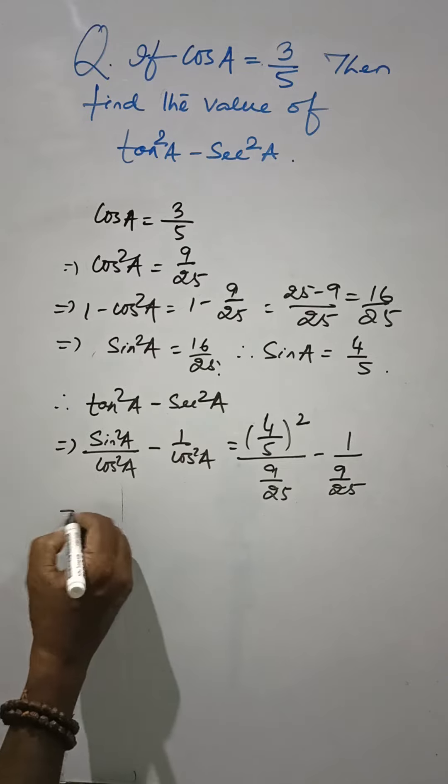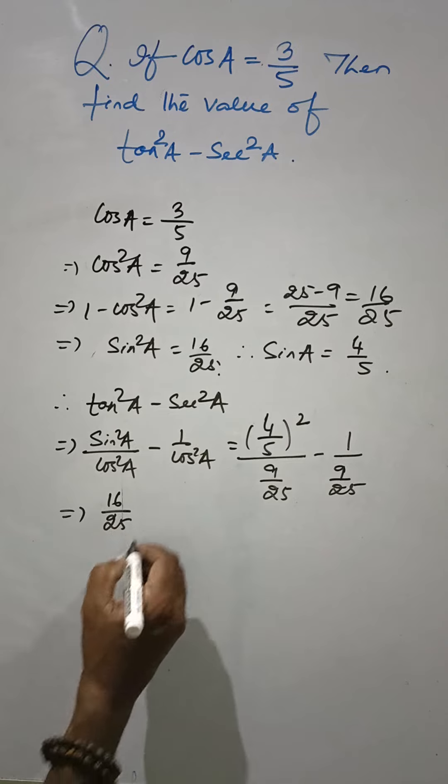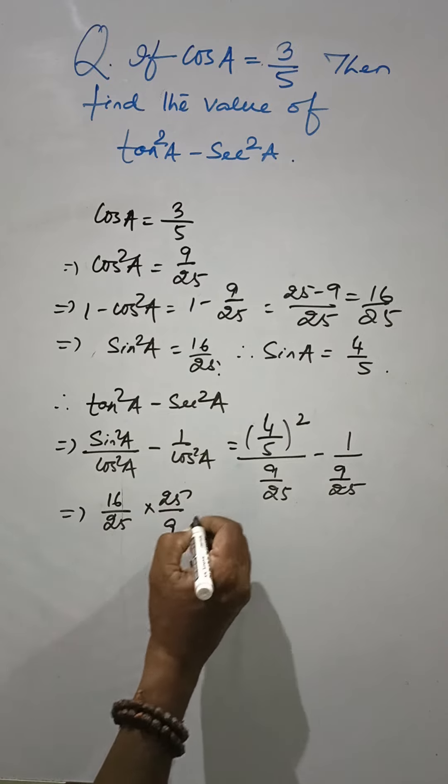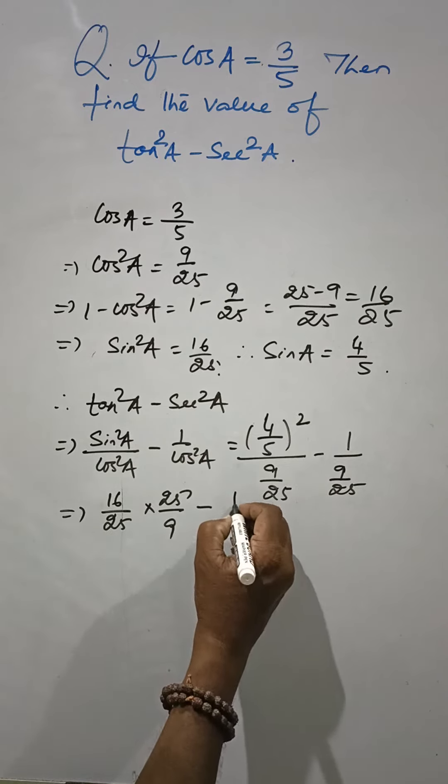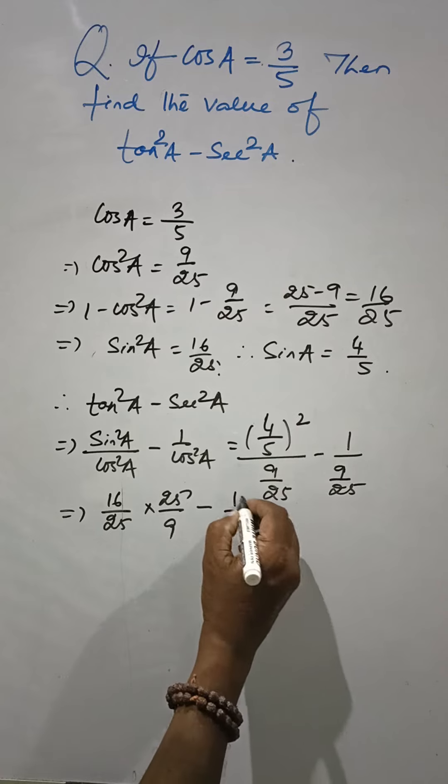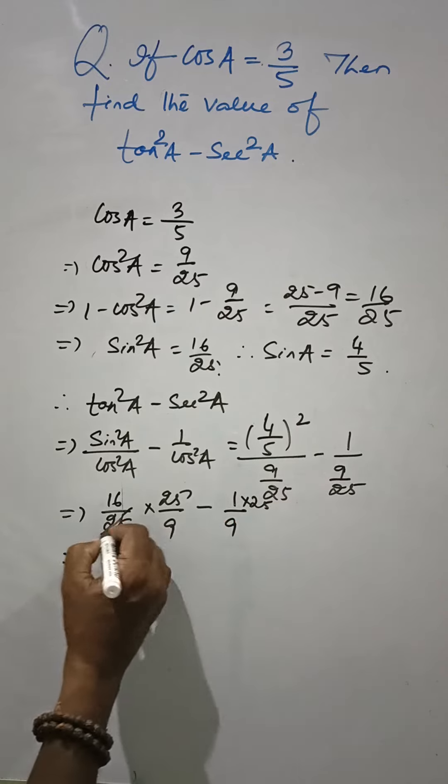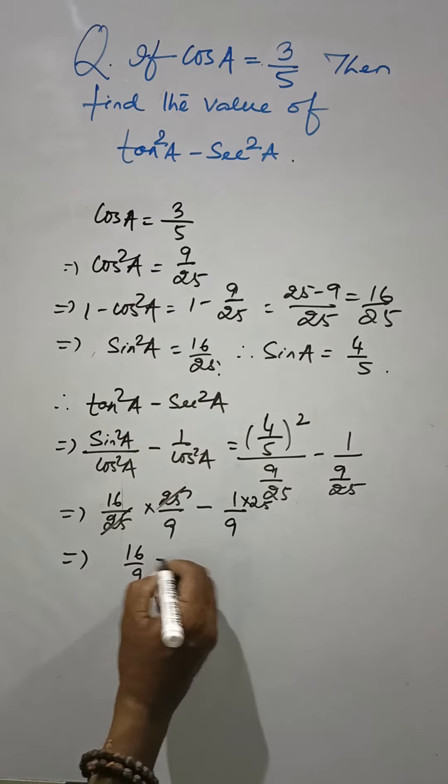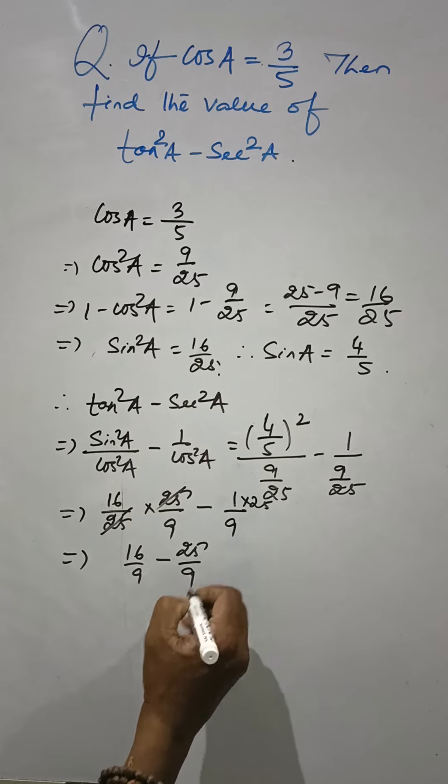This is 16 by 25 into 25 by 9 minus 1 by 9 into 25. Then 25 by 25 cancelled. 16 by 9 minus 25 by 9.